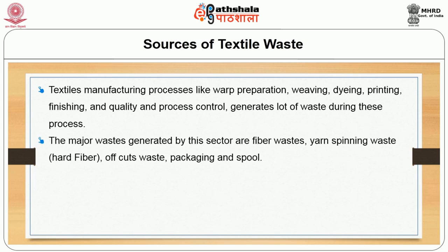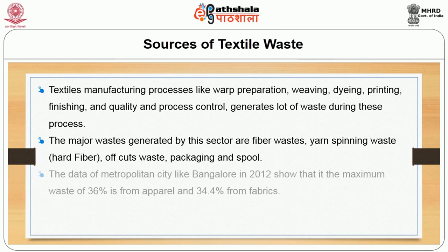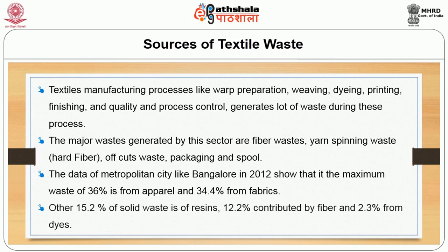The major waste generated by this sector includes fiber waste, yarn spinning waste, hard fiber, off-cuts waste, packaging and spool waste. Data from a metropolitan city like Bangalore in 2012 shows that the maximum waste of 36% is from apparel and 34.4% from fabrics. Other solid waste comprises 15.2% resins, 12.2% fiber, and 2.3% from dyes.